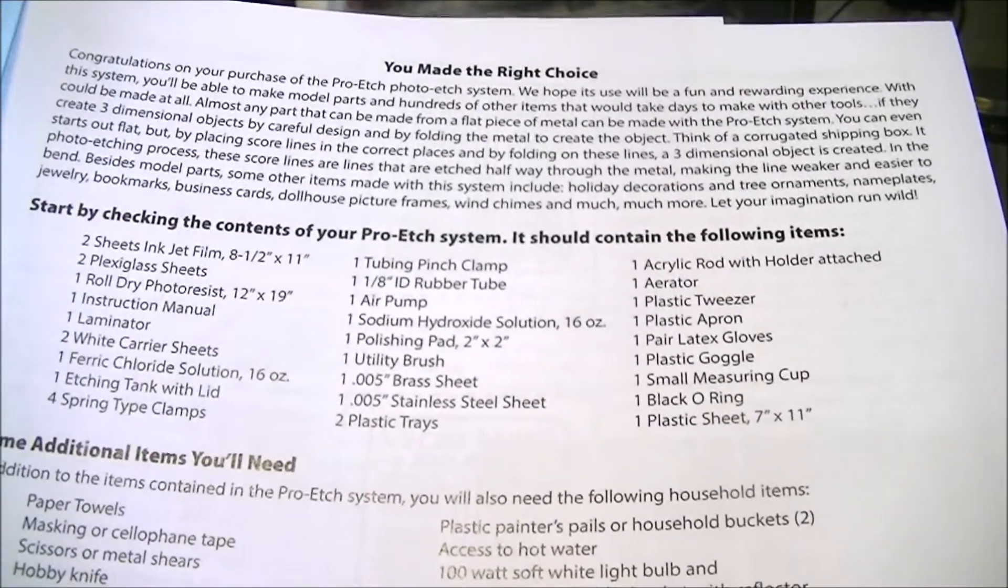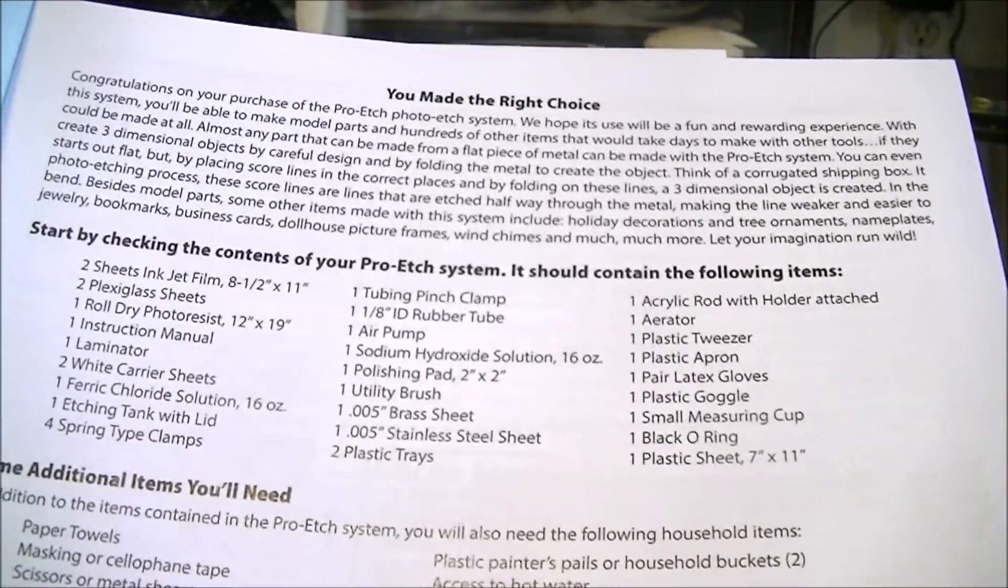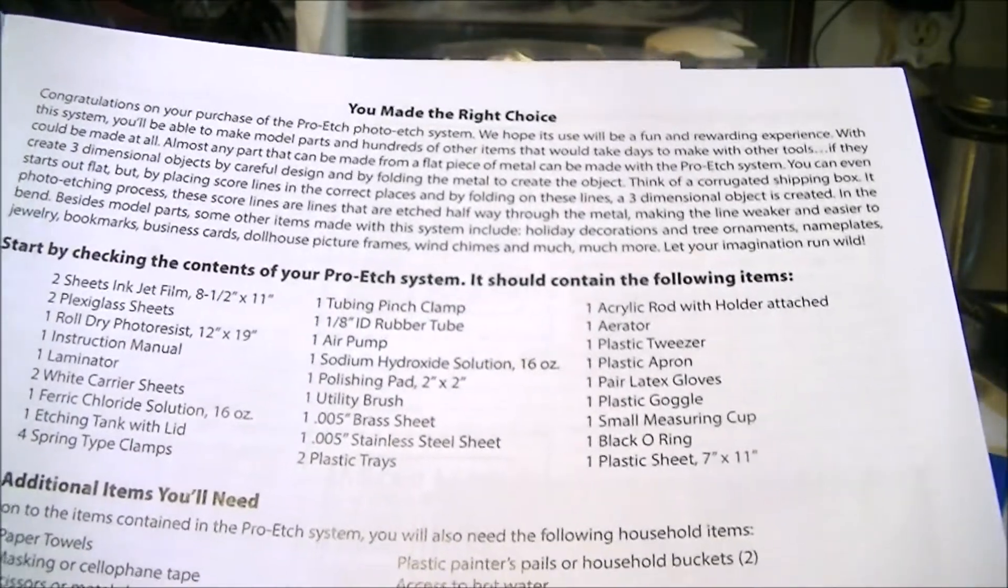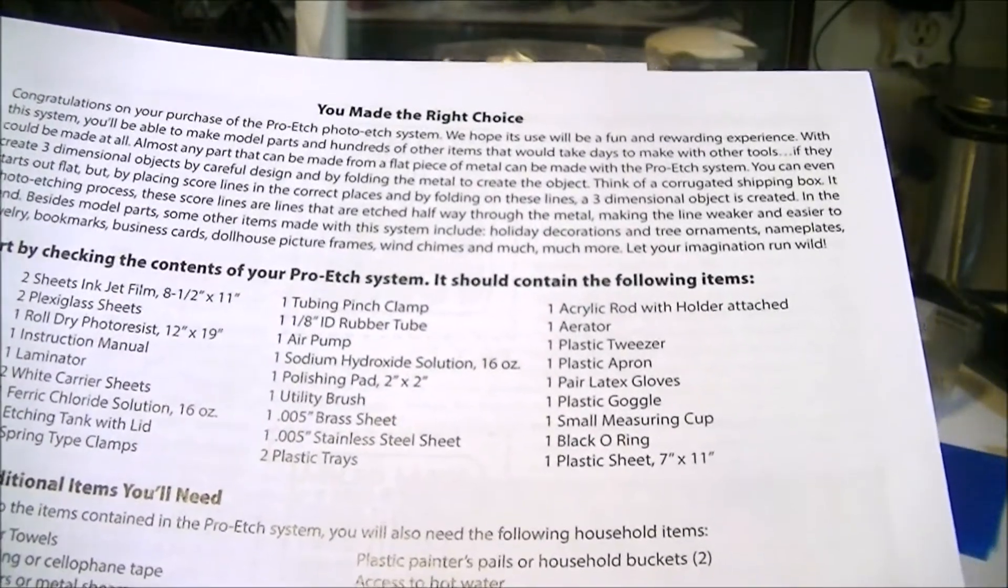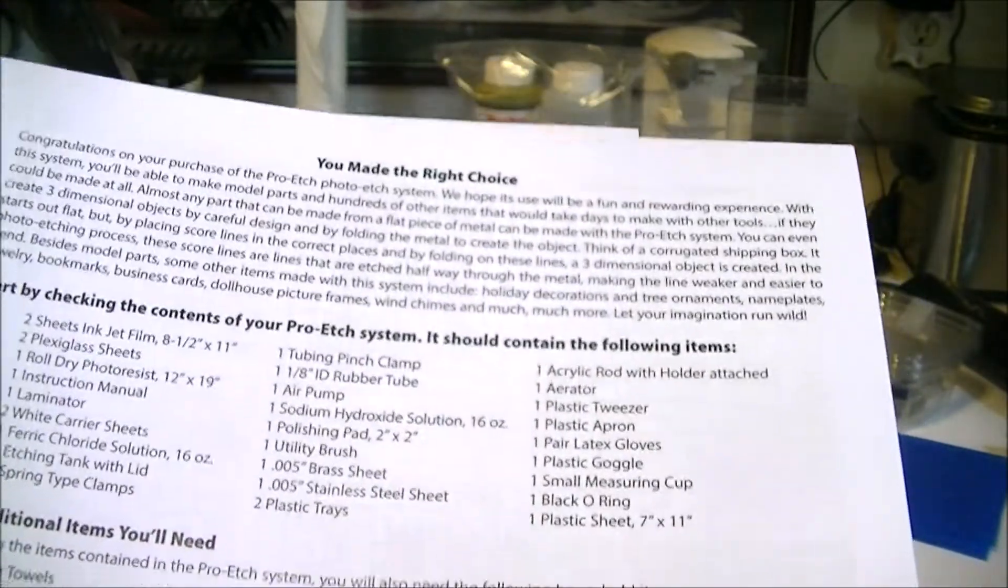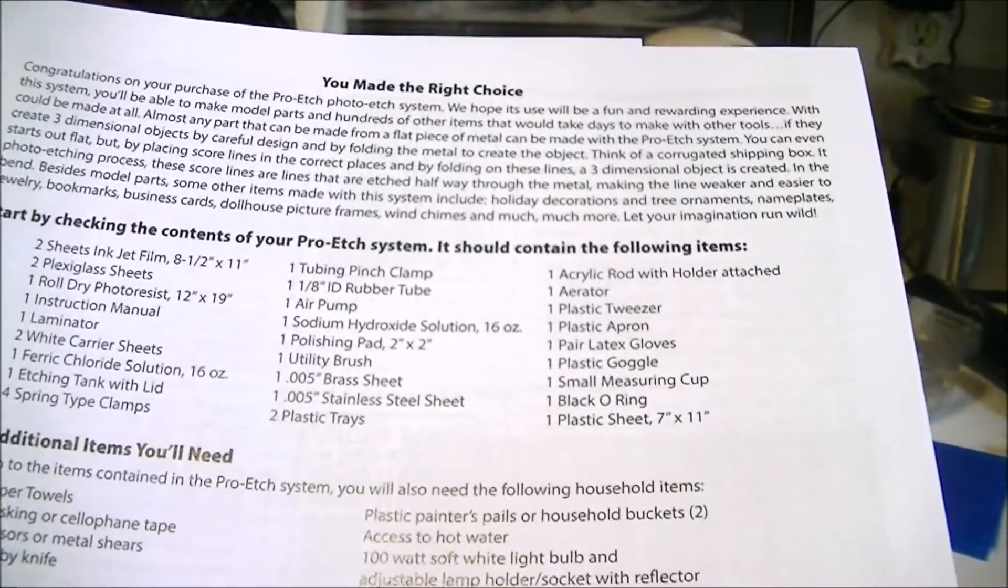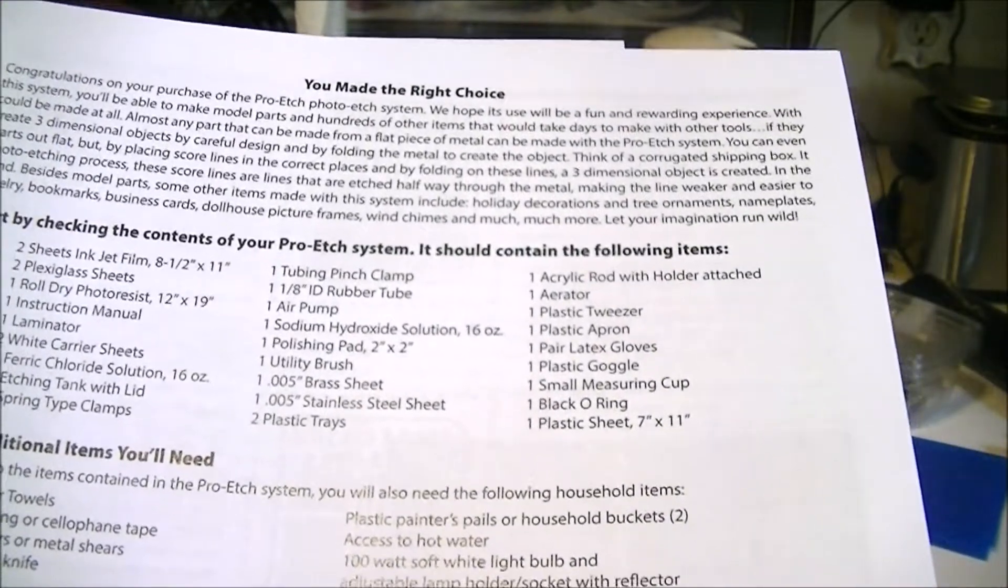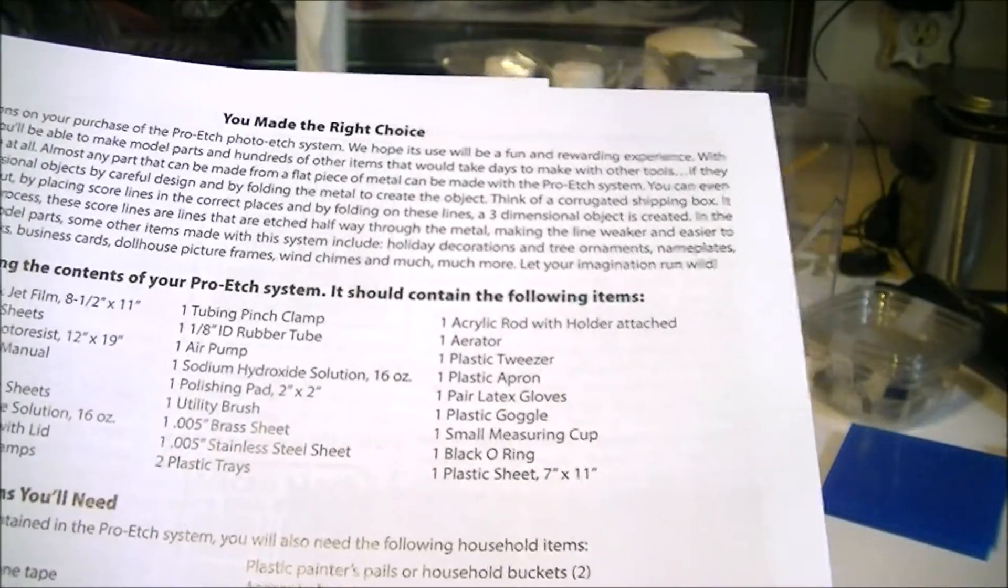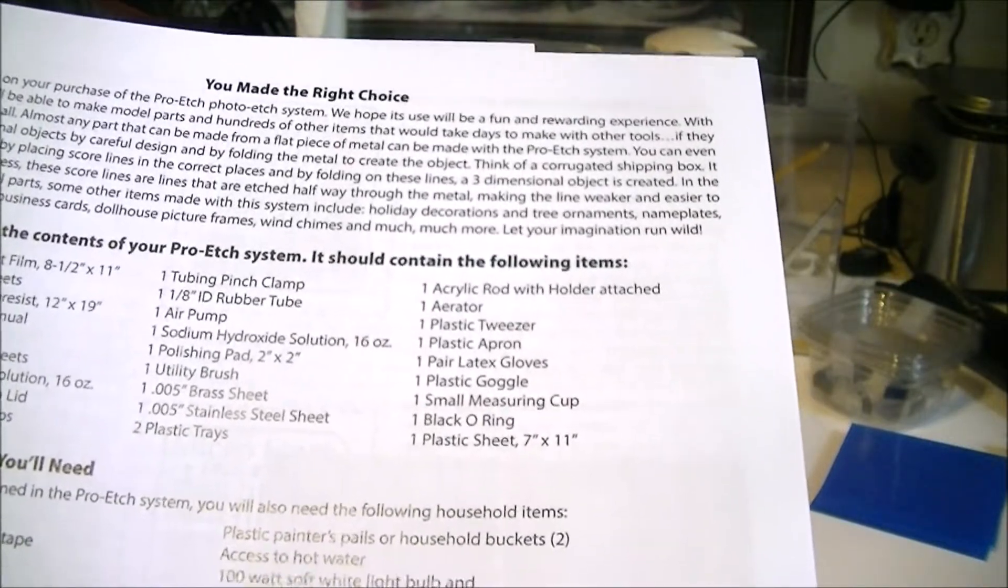One ferric chloride solution 16 ounces, one etching tank with lid, four spring type clips, tubing, pinch clamp, one eighth inside diameter rubber tube, air pump, sodium hydroxide solution 16 ounces, polishing pad two by two 3600 grit, utility brush.